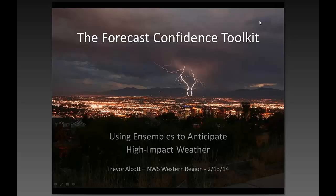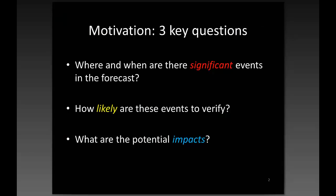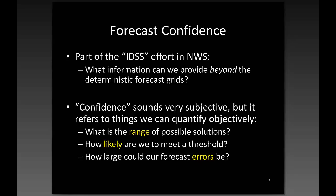Thanks, John. What I'm going to be presenting today is something we've been working on for two or three years, to really improve the way that forecasters are using probabilistic information. What's really driving this effort is three main questions: we want forecasters to better answer where and when are there significant events in the forecast, how likely are these events to verify, and what are the potential impacts. This goes back to the whole DSS effort — if you want to do good DSS, you still need to have good forecast information, and we're trying to make sure we supply forecasters with good science.